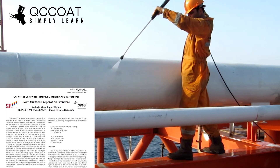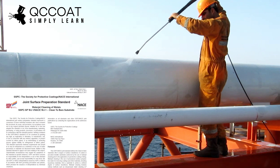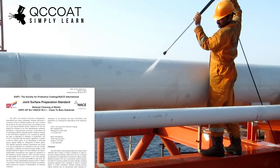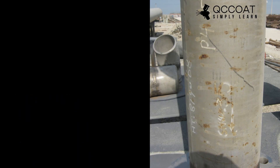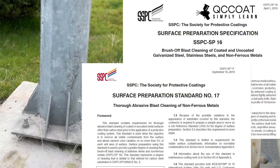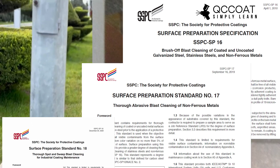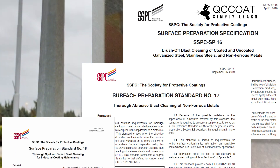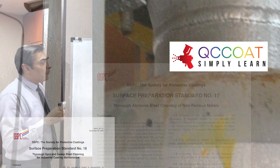Cleaning by water jetting: the clean surface is indicated by WJ, and as the setting number increases, quality increases. SP16, SP17, and SP18 are used when cleaning is done by abrasive blasting and the substrate surface is non-ferrous.